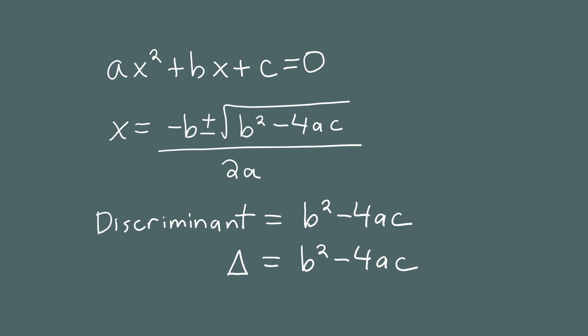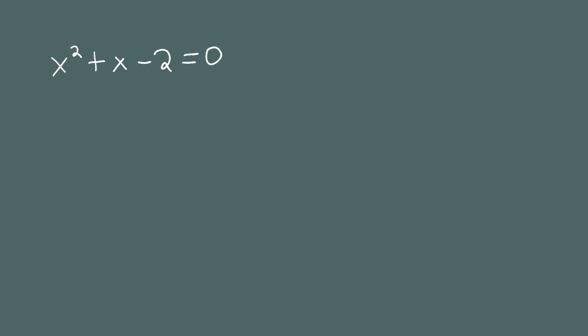What the discriminant does is allow you to determine what type of answers you'll get to this equation. I'd like to demonstrate this by looking at three different examples. First, let's look at x squared plus x minus 2 equals zero.